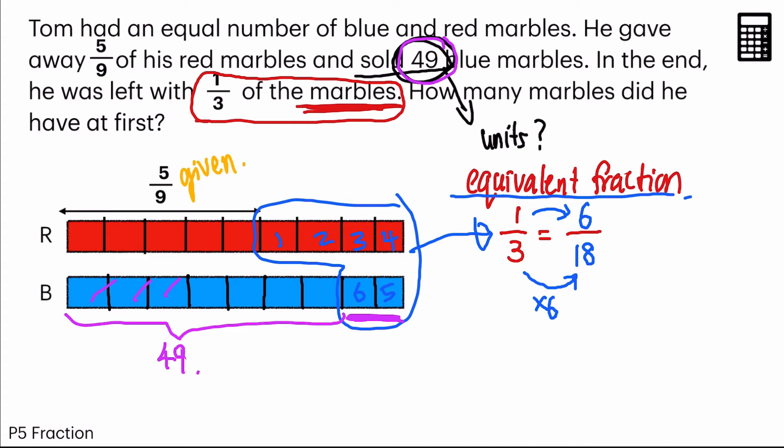Because we know 1, 2, 3, 4, 5, 6, 7. 7 units is equal to 49.